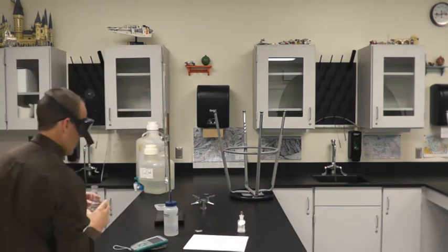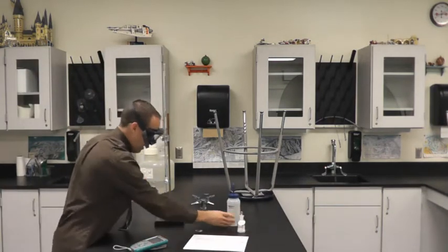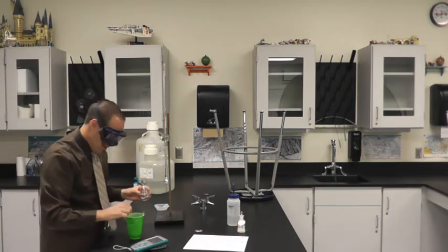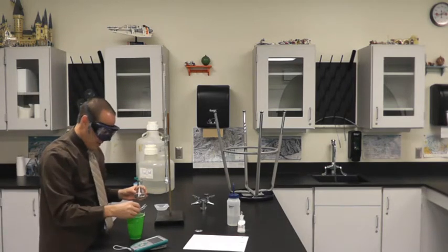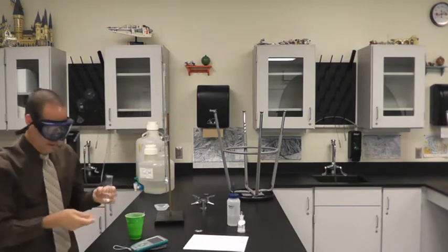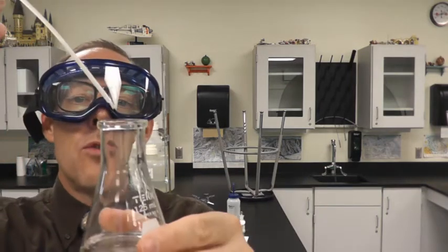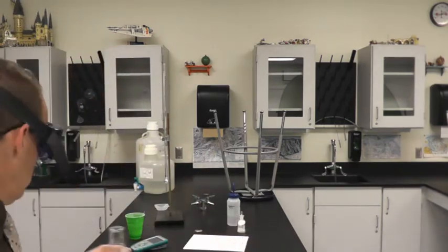So the next step, and this is probably the most important here in titration, is you have to, have to, have to add indicator. So I have some phenolphthalein here. It is the stuff that's actually going to make this turn pink in the presence of hydroxide ions. So I'm just going to drop a couple drops of this in here. And we don't need much.